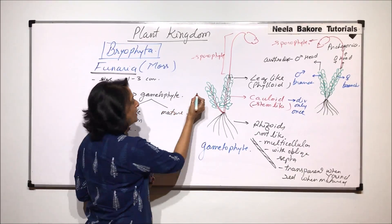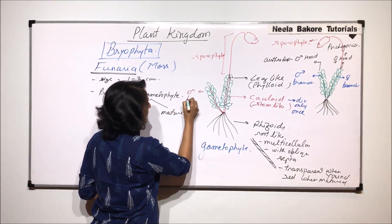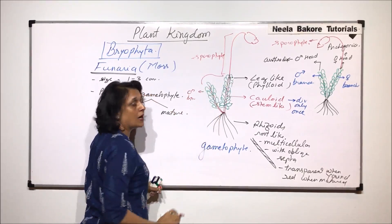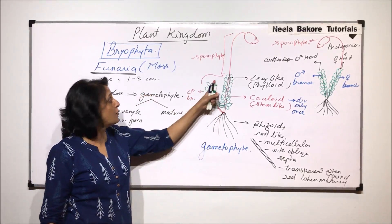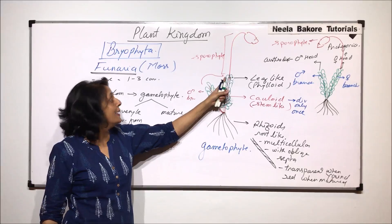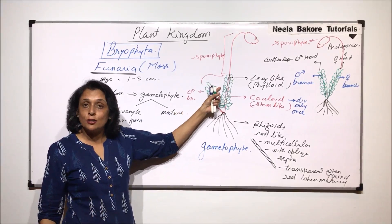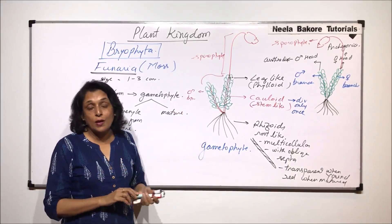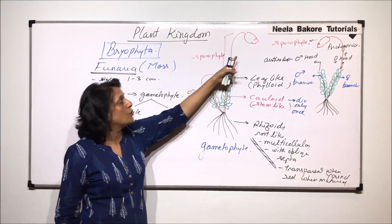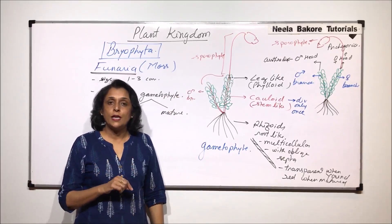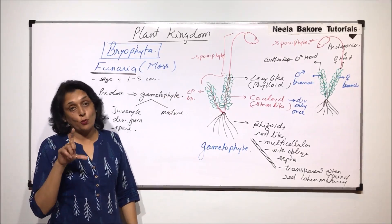That means from the male branch the spores they would have reached up to the female branch for which water was required. Fertilization would have taken place on the female branch where this female gamete is present. Zygotes are formed there and from the zygote develops this sporophyte. So if reproduction takes place then only this sporophyte is formed.